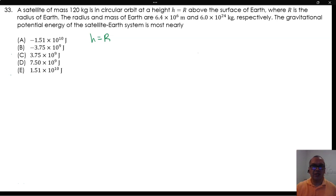Where r is the radius of Earth. The radius and mass of Earth are 6.4 times 10 to the 6 meters and 6.0 times 10 to the 24 kilograms, respectively.